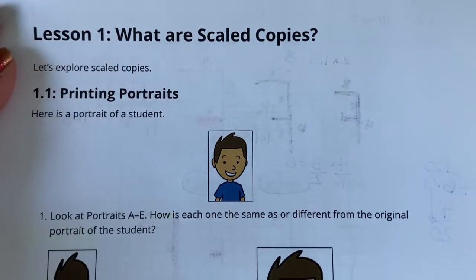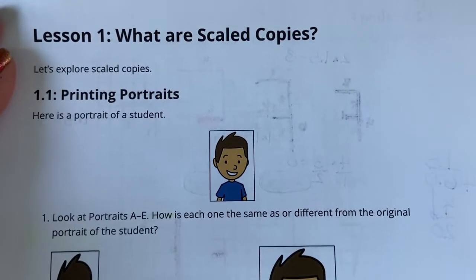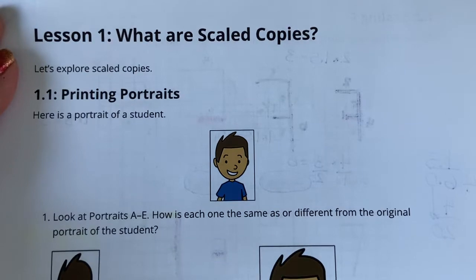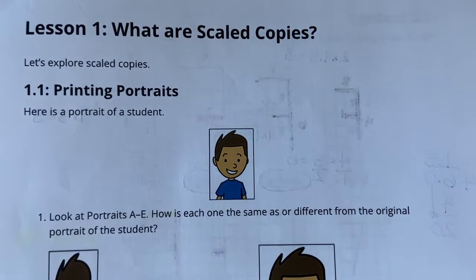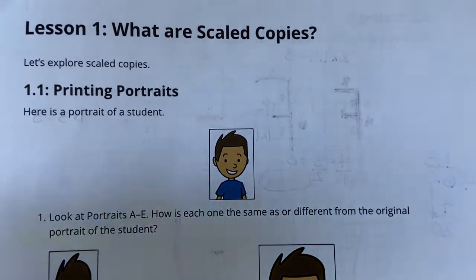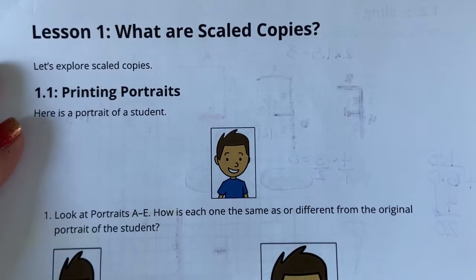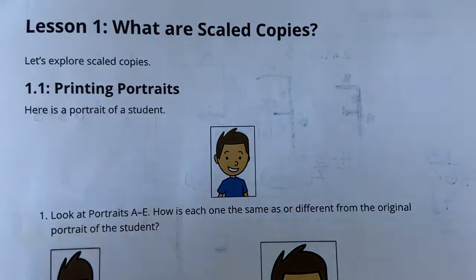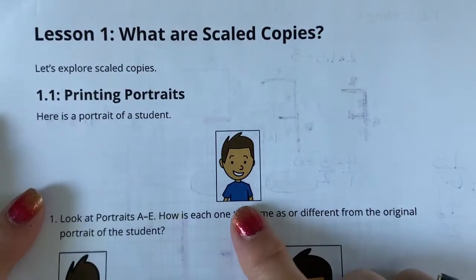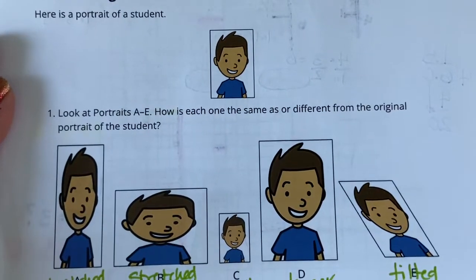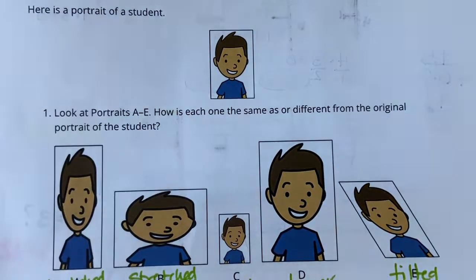All right, you guys, so now we're starting out with unit one, lesson one on skills and scale copies. So we're going to start here, and I've written on this just because this isn't the first time trying to do this video. But you'll see as we go along. Here's a picture of a student, and it's saying which of these would be scale copies. Let's look at them.